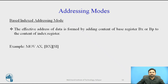The next one is base index addressing mode. The base indexed addressing modes are simply combinations of the register indirect addressing modes. These addressing modes form the offset by adding together a base register and an index register. The effective address of data is formed by adding the content of the base register to the content of the index register. For example: MOV AX, [BX+SI] — moving the value from base plus index to the AX register.